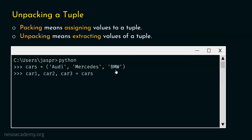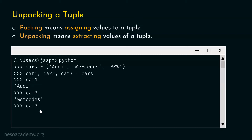To verify the results, let's type car1 and hit enter — we get Audi. Then car2 — we get Mercedes. Then car3 — we get BMW. This clearly explains how unpacking works. We have successfully extracted the values of this tuple. Now let's move on to the next topic.